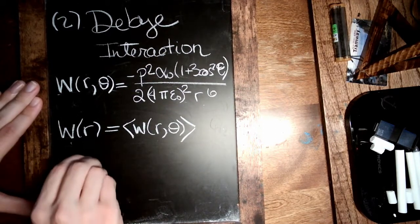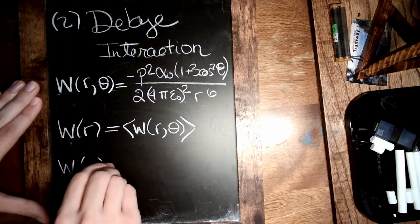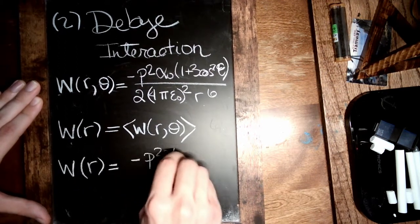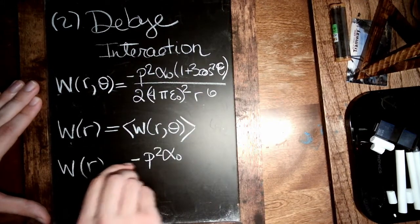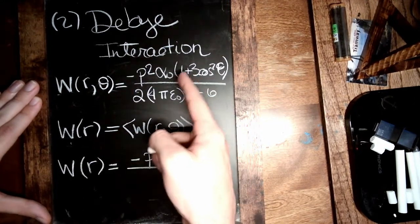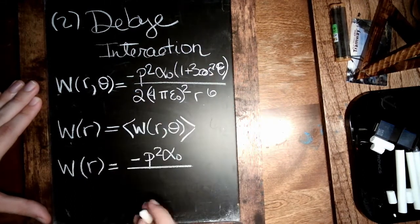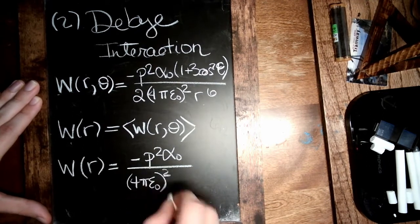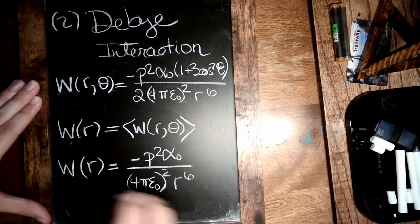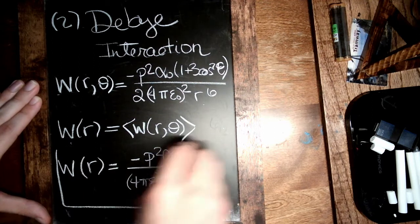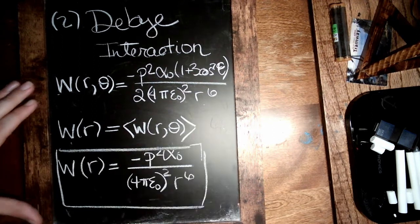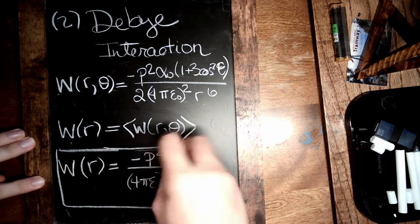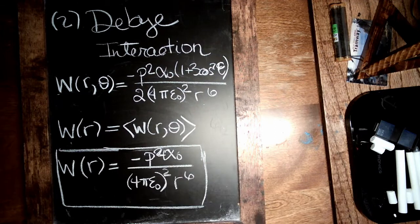And we have our final result is simply P squared alpha zero. This all just averages out to give us a two. We'll get one plus a one. That'll cancel with that two, constant squared, and r to the sixth. So in some sense, that is the total Debye energy. Fix my box a little bit. P squared times alpha zero.